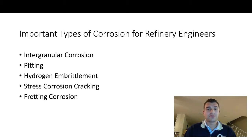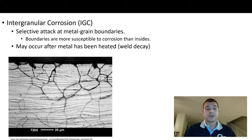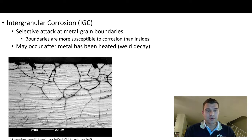A couple of important types of corrosion for refinery engineers are intergranular corrosion, pitting, hydrogen embrittlement, stress corrosion cracking, and fretting corrosion. Intergranular corrosion is when you have selective attack at metal grain boundaries — the boundaries can be more susceptible to corrosion than the interior. This can occur after the metal has been heated, for example during welding, which is called weld decay.